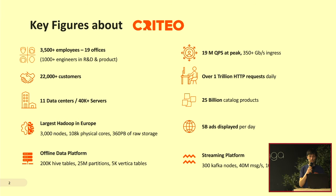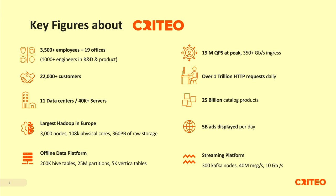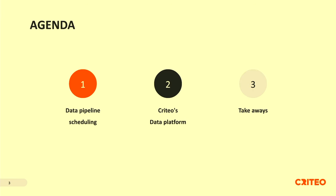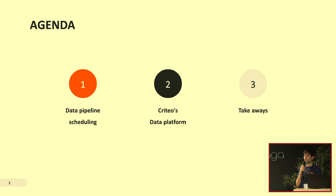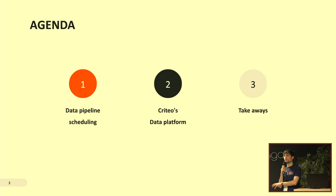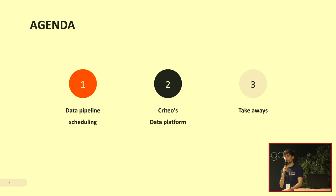We have the largest public cluster in Europe with 3,000 nodes, and our offline data platform has 200,000 tables of data. So it's a lot of data. Our agenda will be: introduction to data pipeline scheduling, then the project built by the Criteo data platform team — where we'll see a bit of Scala — and then we wrap up.